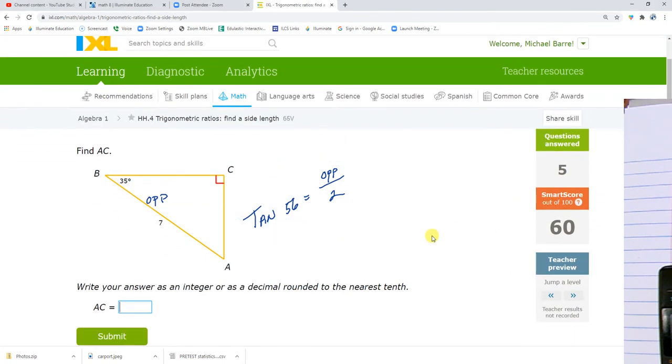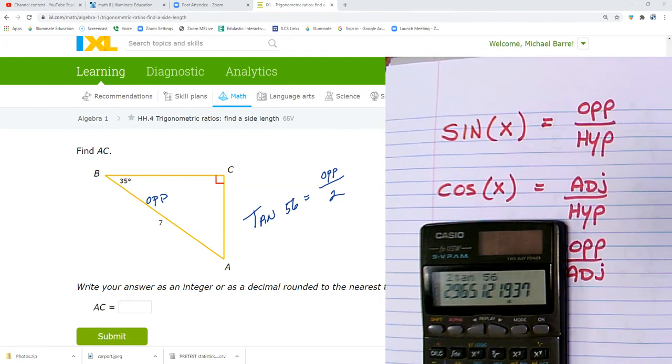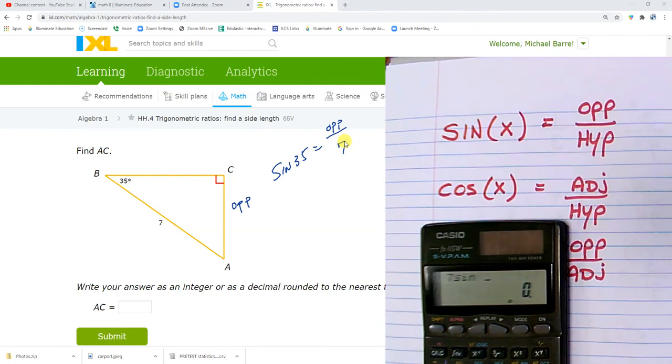Is there anything weird here? Let's identify what I'm looking for. I'm looking for AC. I'm looking for the opposite side. What do I have? I have the hypotenuse. So I'm going to go sine of 35 equals the opposite, which is what I'm looking for, over the hypotenuse of 7. So 7 sine 35. 4.